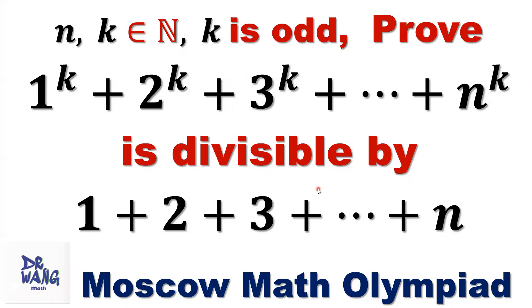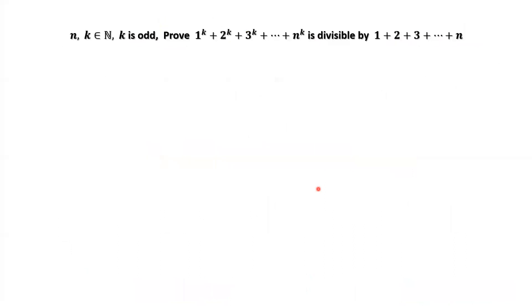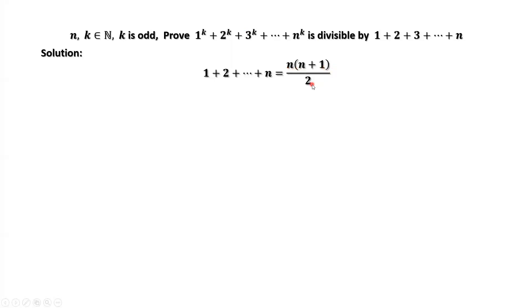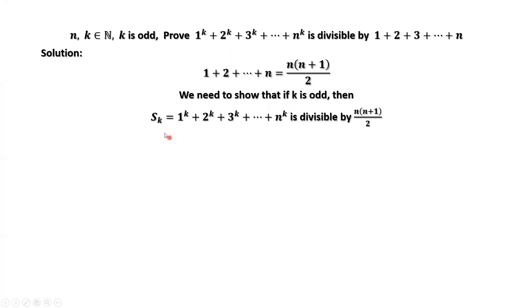This is a challenge question. We are going to discuss this question for different situations: when n is even, and when n is odd. A simple result: 1 plus 2 plus ... plus n equals n times (n plus 1) divided by 2. We need to show that if k is an odd number, then S(k) = 1^k + 2^k + ... + n^k is divisible by n(n+1)/2.